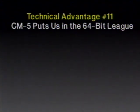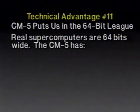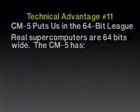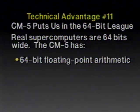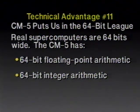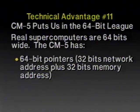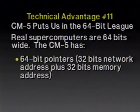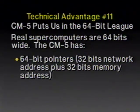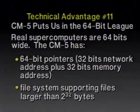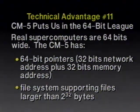Technical advantage number 11: CM5 puts us in the 64-bit league. A lot of customers have told me that any computer that only operates on 32-bit words isn't real. Most real computers are 64-bits wide, and a lot of scientific applications really need 64-bit floating point. The CM5 has 64-bit floating point arithmetic and 64-bit integer arithmetic, which is an improvement over the CM2. Even more important, it has 64-bit memory access paths — on every clock tick, every floating point unit can get a 64-bit operand from memory. There are 64-bit pointers: composing 32-bits of network address with 32-bits of memory address gives a 64-bit pointer identifying any byte throughout the machine.